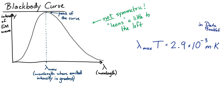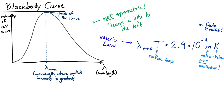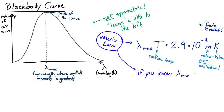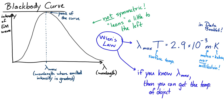I want to point out those units: that's meters times Kelvin — not milli-Kelvin, but meters times Kelvin. This is called Wien's law. What this tells us is that if you know the maximum wavelength emitted by the black body, you can figure out the temperature of the object. That turns out to be extraordinarily powerful in many circumstances.